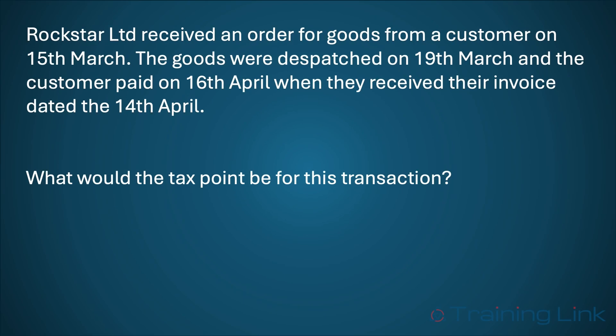We'll now work through a couple of examples to put this into practice. Rockstar Limited received an order for goods from a customer on the 15th of March. The goods were dispatched on the 19th of March and the customer paid on the 16th of April when they received their invoice dated the 14th of April. What would the tax point be? Receiving the order on the 15th of March can be ignored as this does not in itself create a tax point. The goods were made available on the 19th of March — this is the basic tax point. The next check is to confirm whether the invoice or payment was made within 14 days of this date. In this case, neither were made within 14 days, and therefore the basic tax point remains as the tax point for this transaction on the 19th of March.